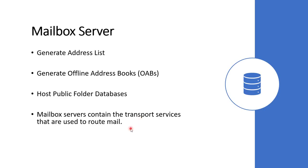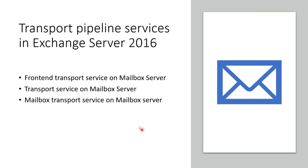The transport pipeline services in Exchange Server 2016 contain the following three main transport services: front-end transport service on mailbox server, transport service on mailbox server, and mailbox transport service on mailbox server. All these transport services are configured on the mailbox server.